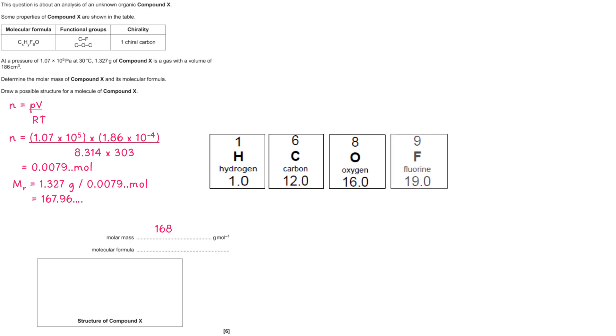If we have a look at the periodic table, you'll see that the relative atomic masses for hydrogen, carbon, oxygen, and fluorine are all given as whole numbers. So I need to put 168.0. There's no decimals there, so the 167.96 dot dot dot needs to be rounded up to 168.